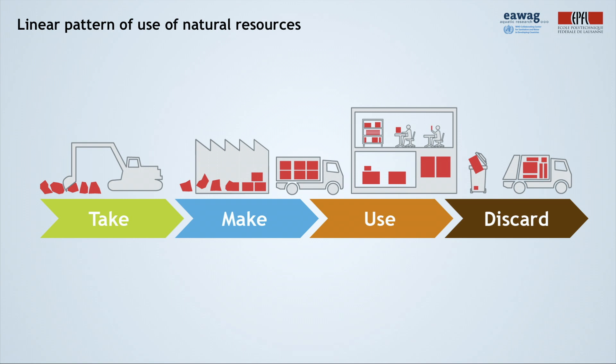However, such a pattern simply cannot be sustained by the Earth's system. On the one hand, the sources of materials are finite, and on the other hand, there are limits to the ability of Earth's ecosystems to recover from habitat degradation and pollution by various hazardous and other chemicals.